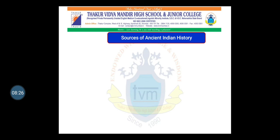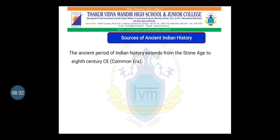Next we will see sources of ancient Indian history. The ancient period of Indian history extends from the Stone Age to the 8th century CE. This is the timeline of ancient history. For the Stone Age period, as we have already discussed, there were no written sources available at that time. Archaeologists came to know about this period by doing excavations of various places.